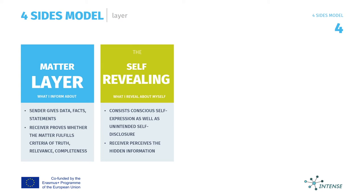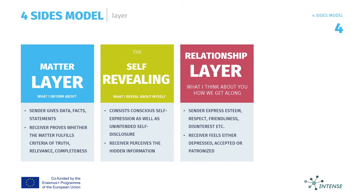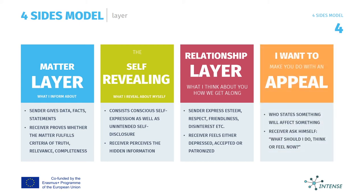The question in our model is: did the receiver hear the same things the sender told about him or herself? Third, the layer of relationship — this expresses self-esteem, respect, friendliness, interest, and so on. What does the receiver feel when he or she hears what the sender has to tell? And fourth, there's the layer of appeal — what does the sender want the receiver to do?